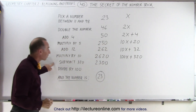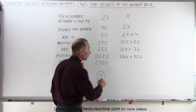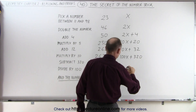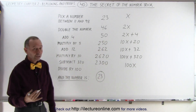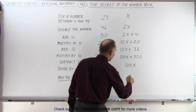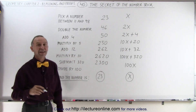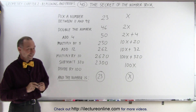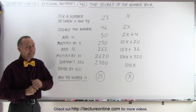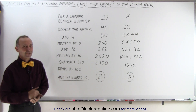Now we're going to subtract 320 from that. Notice they picked some very special numbers here, because when we subtract 320, we simply end up with 100x. And when you divide by 100, sure enough, you end up with the number you started with. So it's not as mysterious as we thought — but you can still fool a lot of people into thinking you know something they don't. That's how it's done.